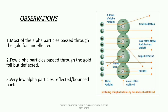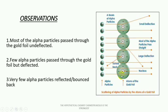He observed that most of the alpha particles passed through the gold foil undeflected. In other words, a lot of the alpha particles emitted from the radioactive source were able to pass through the gold foil without deflection. We can see that from this diagram — these red lines represent beams of alpha particles that passed through without deflection. Any round circle you see here represents an atom of gold within the gold foil.